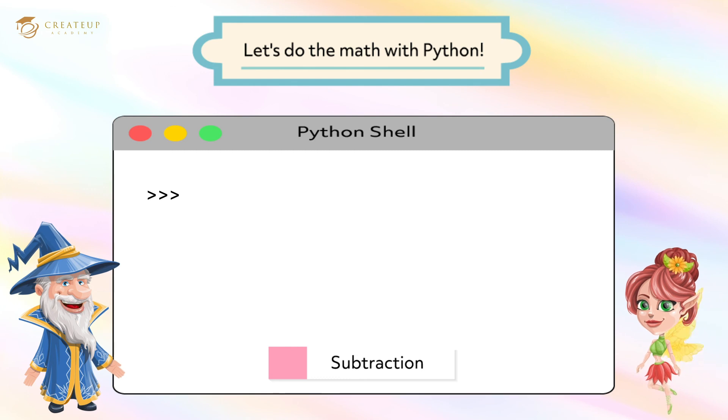Let's calculate 7 minus 2. Type print after the prompt and type 7 minus 2 in parentheses. The next time you press the Enter key, the result of the calculation, 5, is displayed.